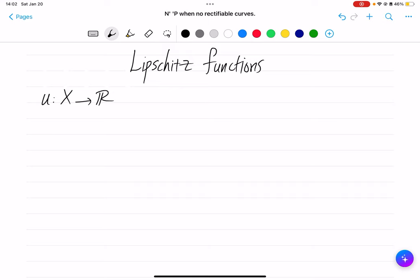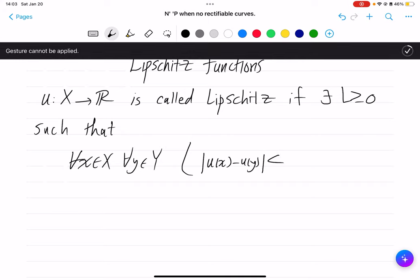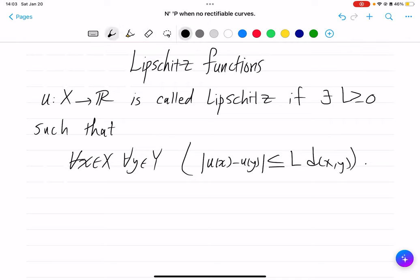Let's recall that a real valued function on a metric space X is called Lipschitz if there exists some L, a real number, such that for every pair of points from your space, the measure of how far the images are is bounded by L times the distance of X from Y. So if you have some control over how far the two points are, then you get a control on how far their images will be.